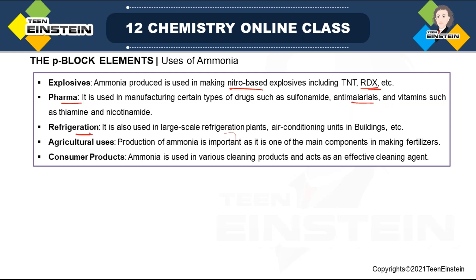The third application is refrigeration — it can be used for large-scale refrigeration plants, air conditioning units in buildings, etc. The fourth application is agricultural use; the production of ammonia is important because we can make fertilizers starting from this compound. Fifth, consumer products — it is used in different types of cleaning products because of its effective cleaning property. These are the five major fields where we see the application of ammonia.